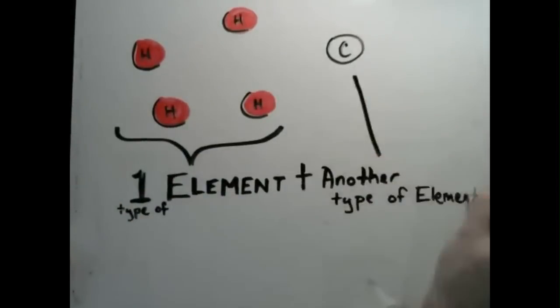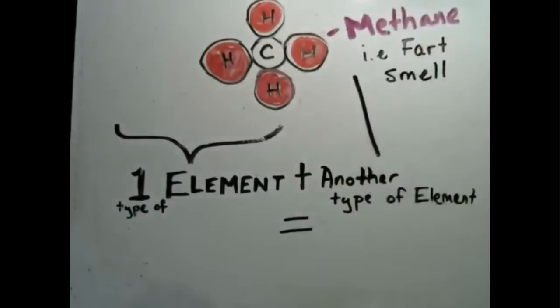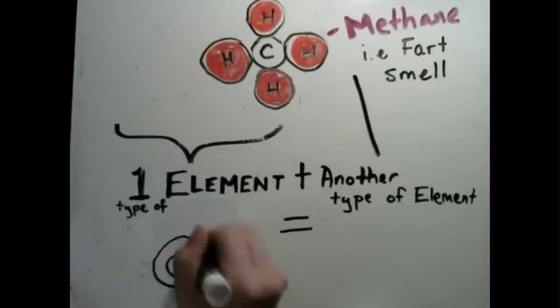But what if one kind of atom, like hydrogen, wanted to hang out with the king of organic life, carbon, and make methane, the gas of cutting the cheese? Adding one type of element to another type of element is called a compound.